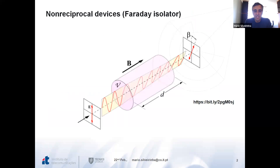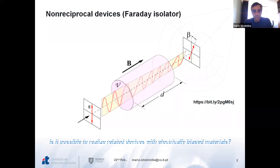I work mostly on electromagnetics, and one of the directions exploited in recent years is having non-reciprocity without magnetic fields. The standard solution for non-reciprocal devices that enable one-way propagation is to use ferrites biased with a magnetic field, but these structures are bulky. So the starting point of this work is: can we do something similar without magnetic fields, just with an electric bias? If you're familiar with conventional circuits, one-way devices use transistors, and that was our motivation.